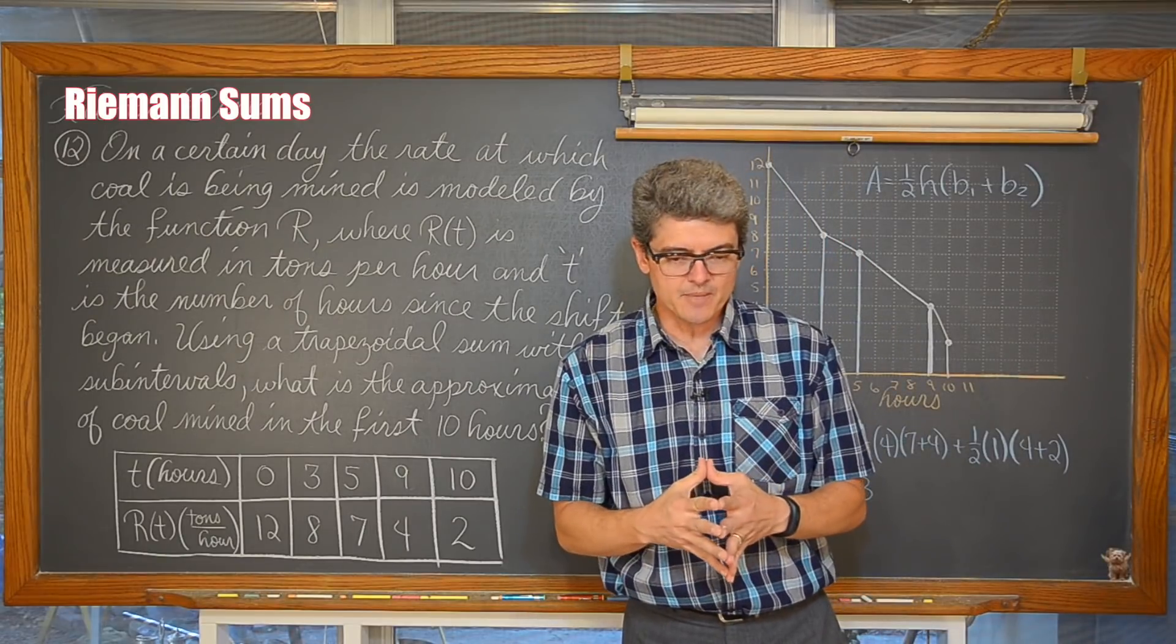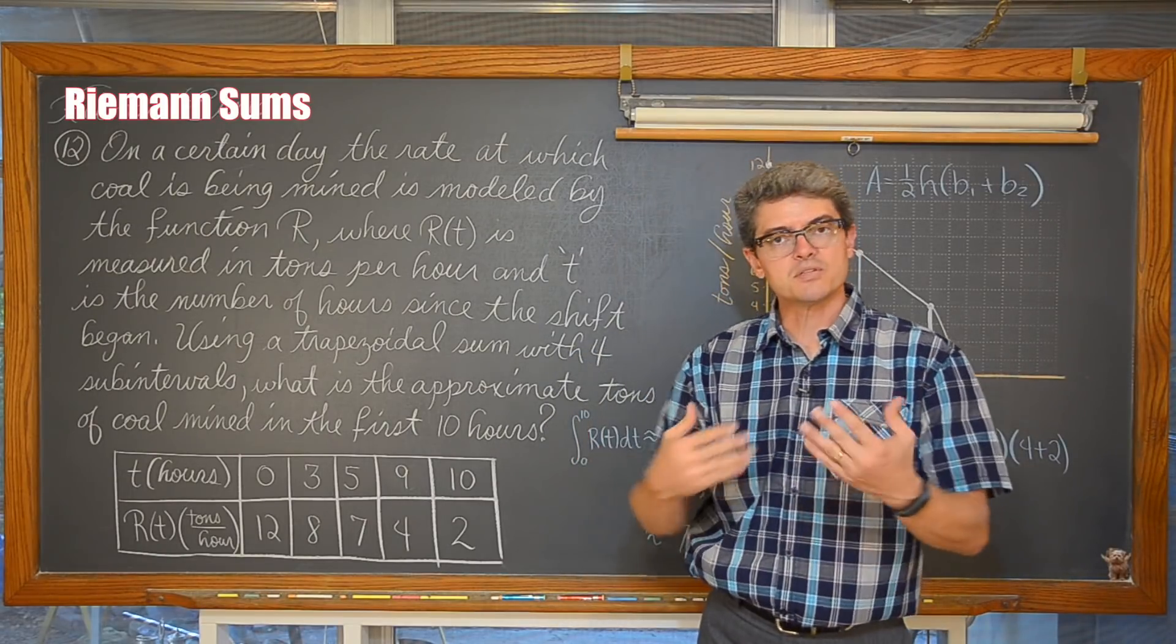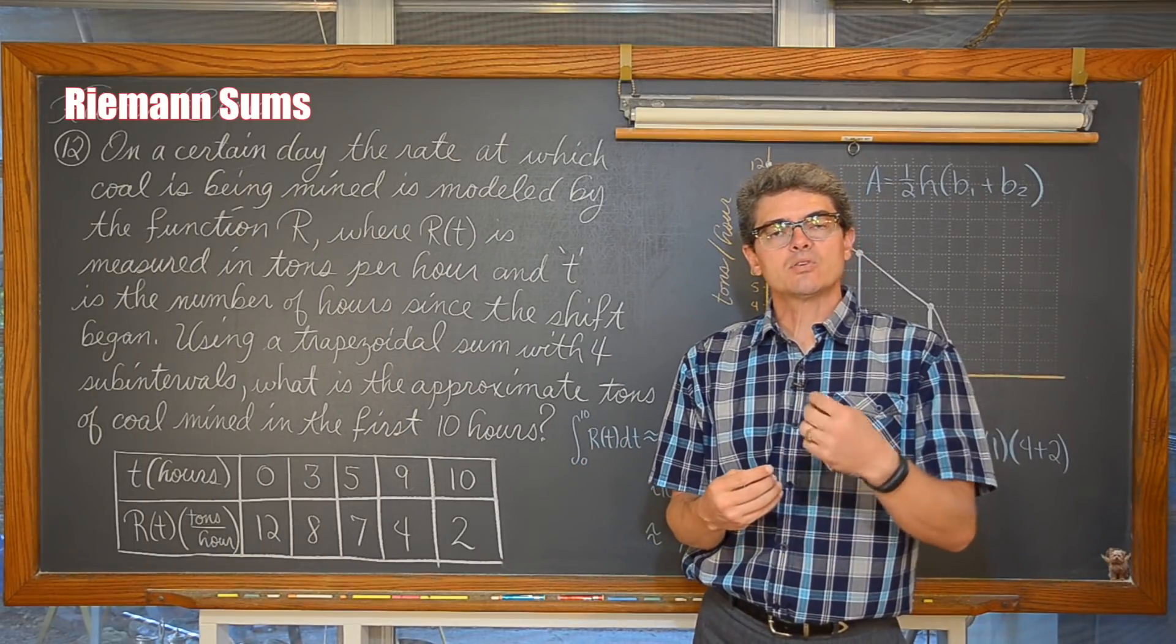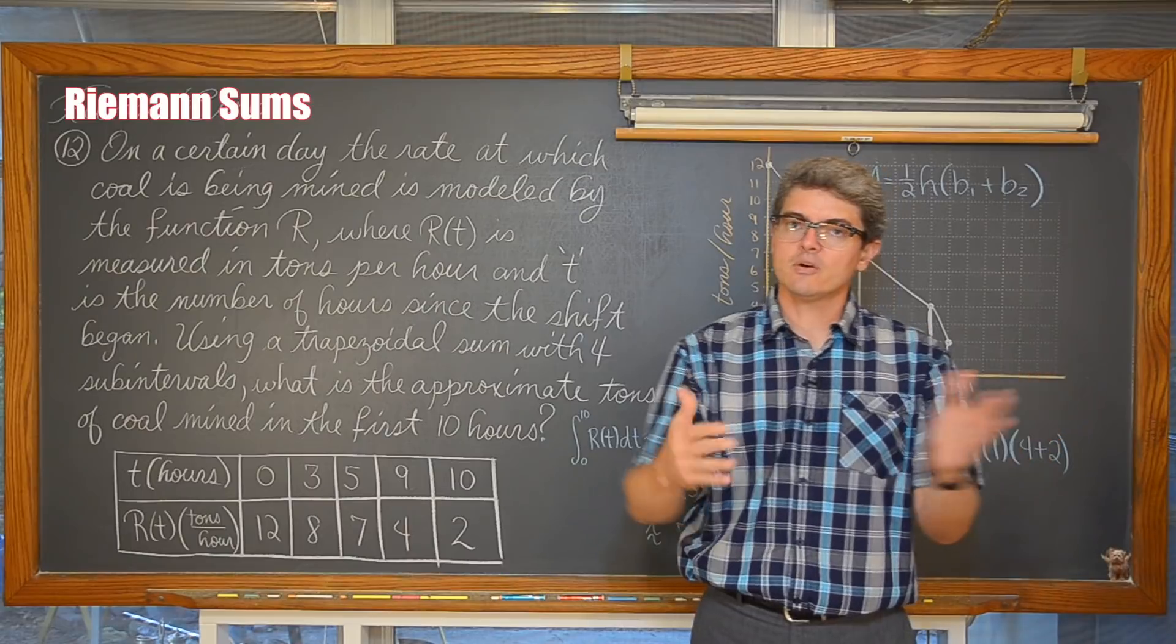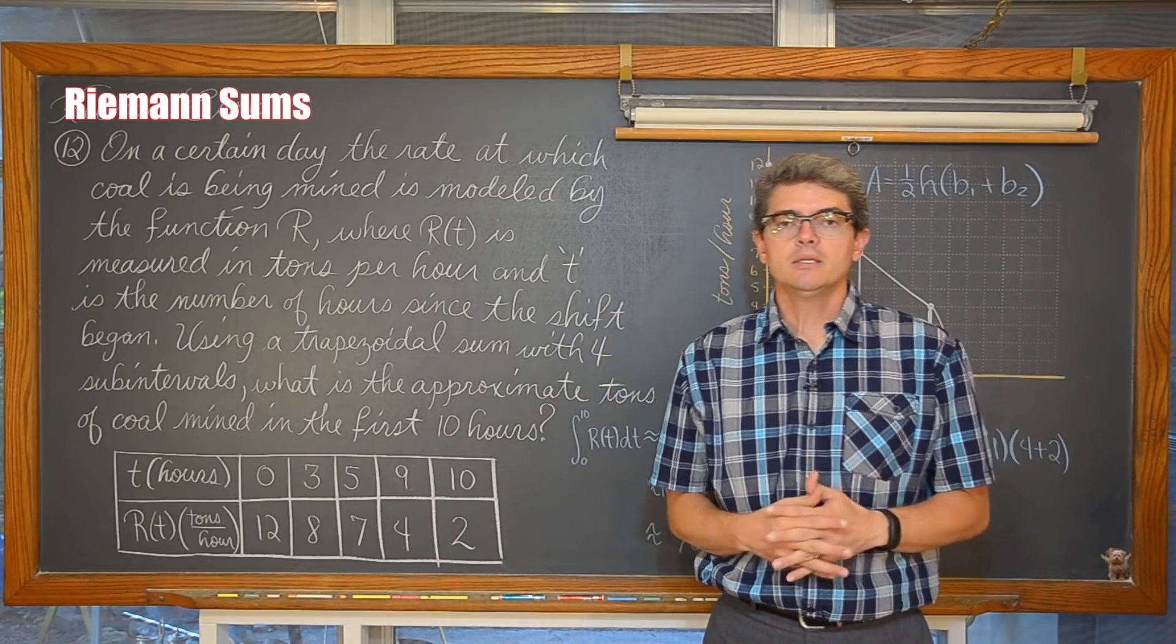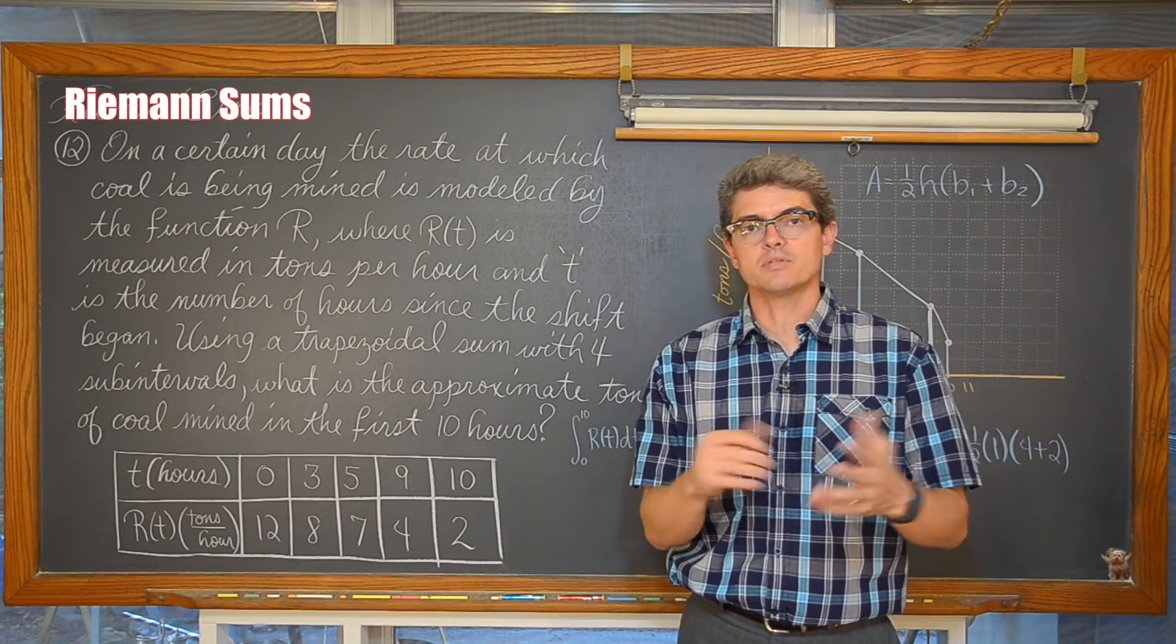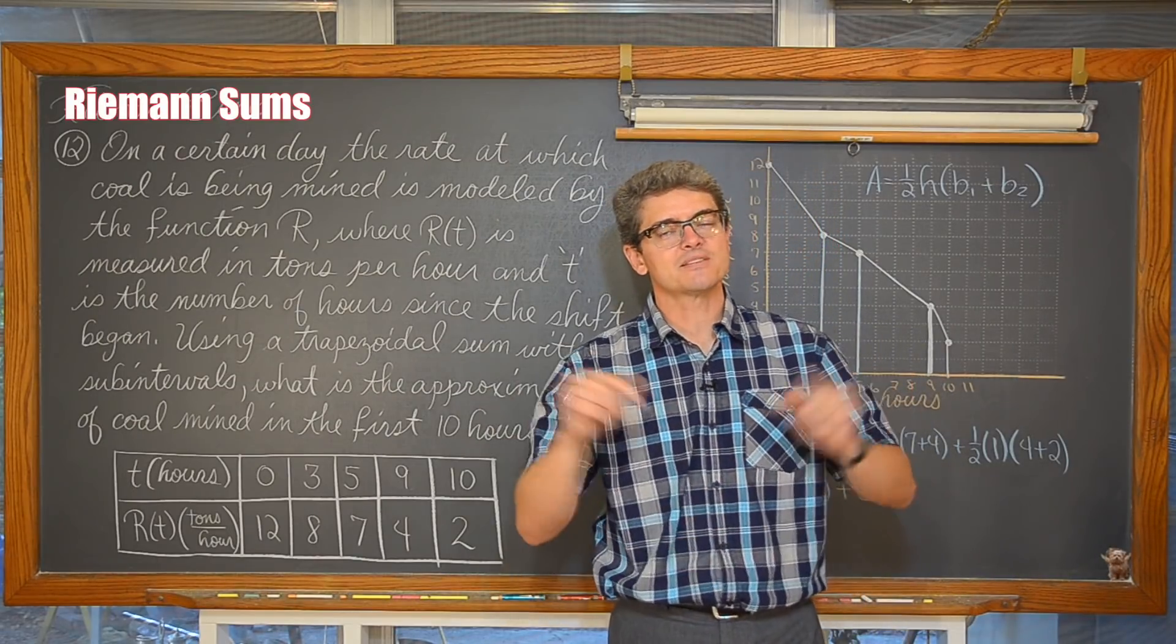Now, as we move into our next example, we are going to be, again, second example for Riemann sums. We will be given some information about a function, and then determine, or list from low to high, what type of values you would get from certain types of Riemann sums. Last example, right now.